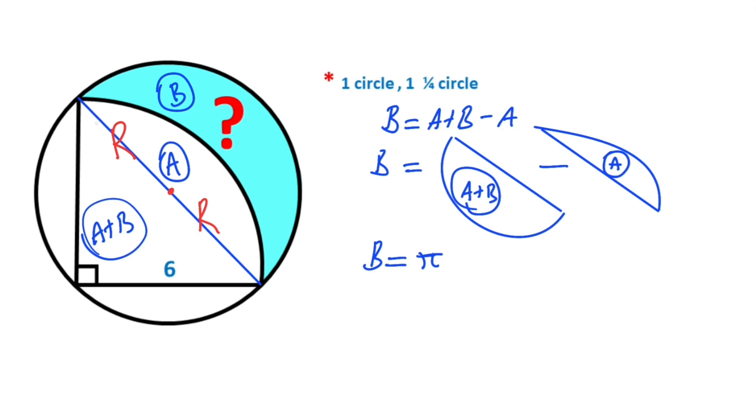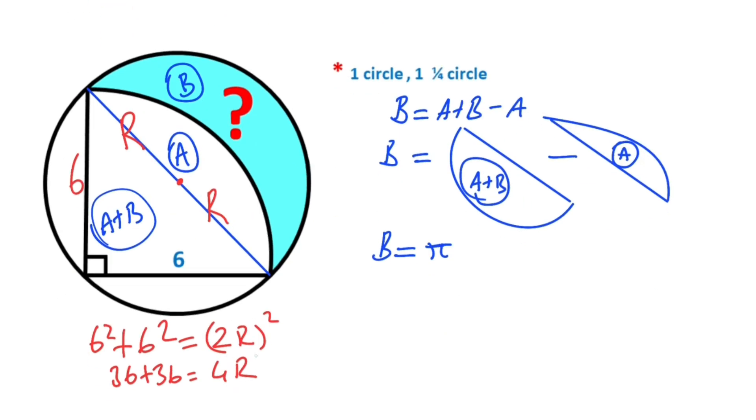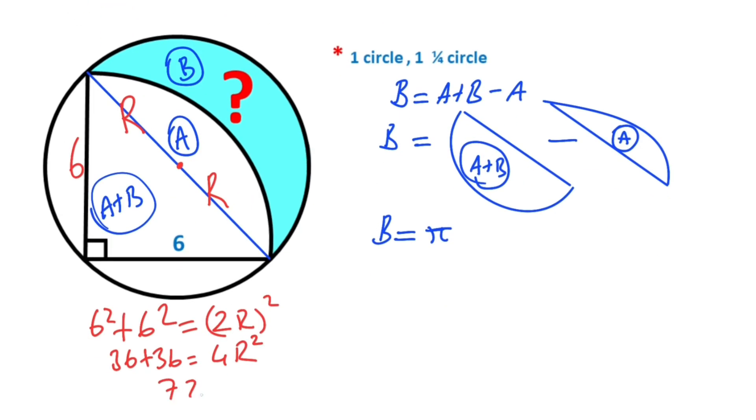For this triangle, if we apply Pythagorean theorem, we know that this side equals six. So six squared plus six squared equals 2r whole squared. 36 plus 36 equals 4r squared, that means 72 equals 4r squared.